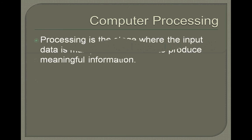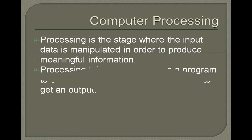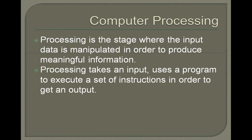Computer Processing. Processing is the stage where the input data is manipulated in order to produce meaningful information, or in other words, an output. Processing takes an input, uses a program to execute a set of instructions, and does this in order to get an output.